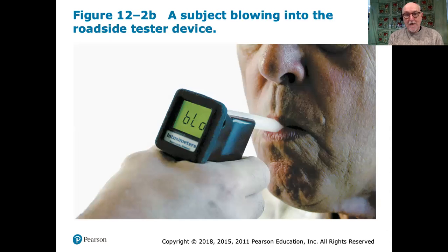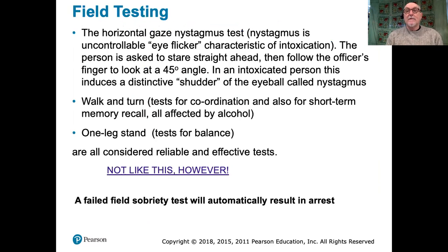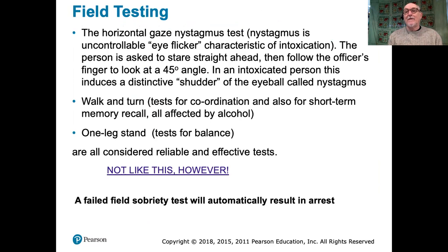A typical roadside tester is good enough to get a good idea about blood alcohol levels, remembering that blood alcohol levels are directly related to the amount of alcohol that people breathe out. However, this is not good enough for presentation in a court of law. If somebody is a little bit below the limit on the tester but the officer performs physical field tests which they fail, that is evidence enough to remove them from the roads and arrest them for driving under the influence.